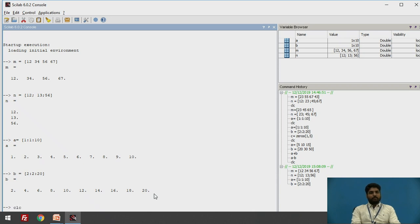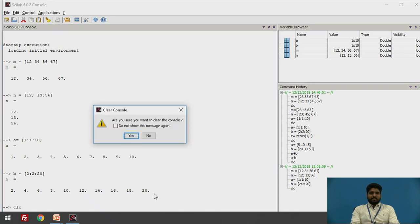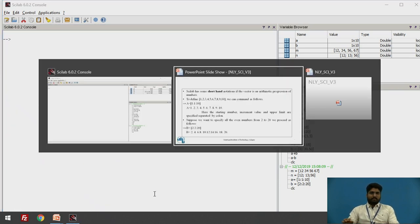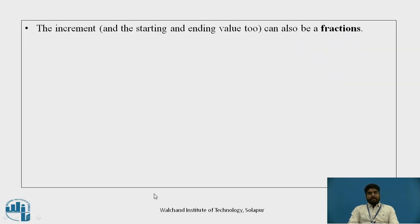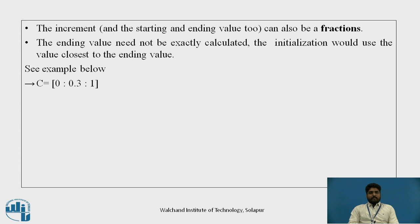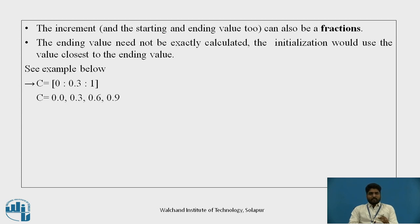To clear the console window, the command is clc, then Enter — it will ask to clear the console, just clear it. The increment, starting value, and end value can be a fraction also. For example, 0:0.3:1 — where 0.3 is the fractional increment, the first number is 0, and the output goes up to the closest value to the ending value, not exactly the end value.